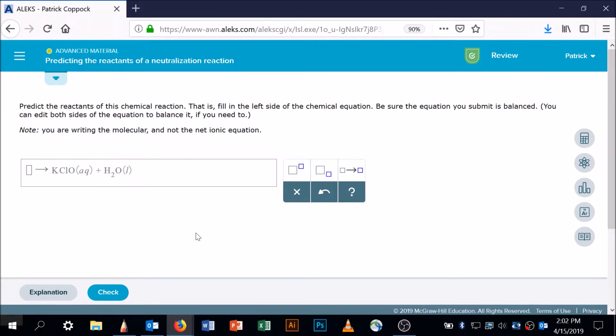Let's go back over here and look at this. What we're supposed to do is figure out if I have potassium hypochlorite and water as products, what must the reactants have been.